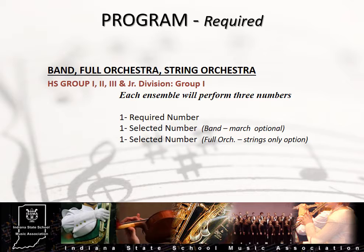Groups 1, 2, and 3 High School and Group 1 JME have required music lists. Ensembles entering these group levels must play one number from the required list for their group level. Organizations not performing required music when specified for their respective classifications shall be penalized by being rated one division lower by the judges. A selection from a higher group level list may be used as a selected number, but may not be used to satisfy the requirement for the required selection of the group level entered.